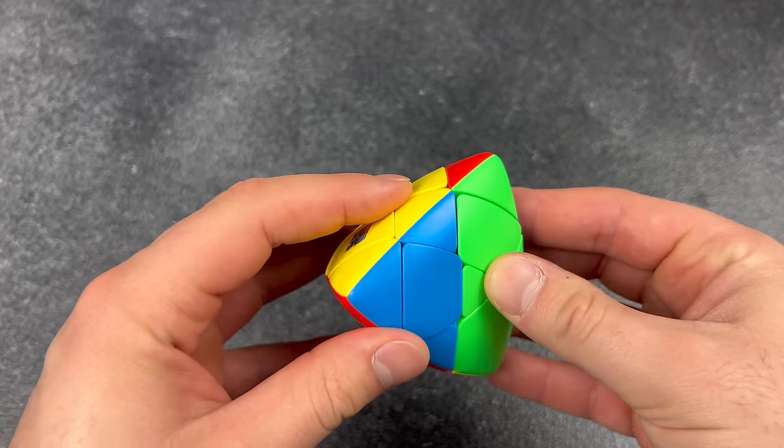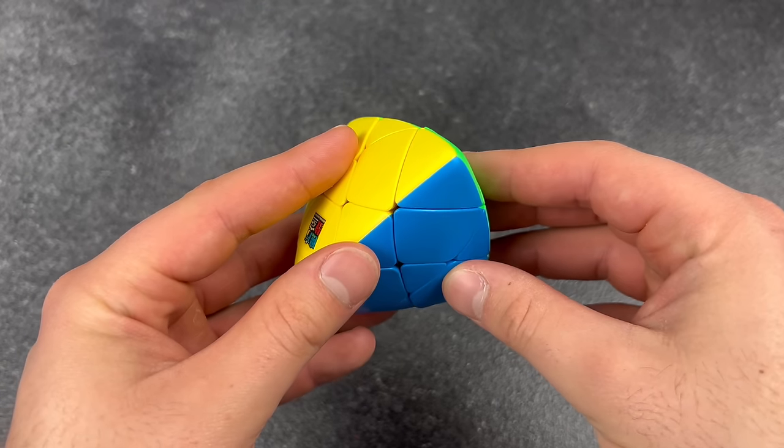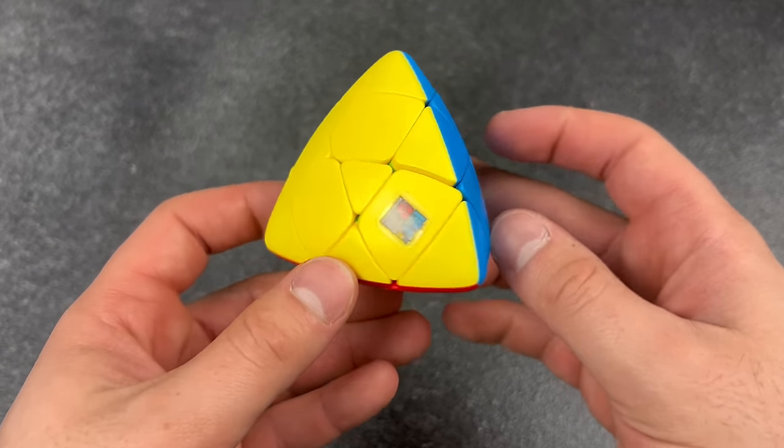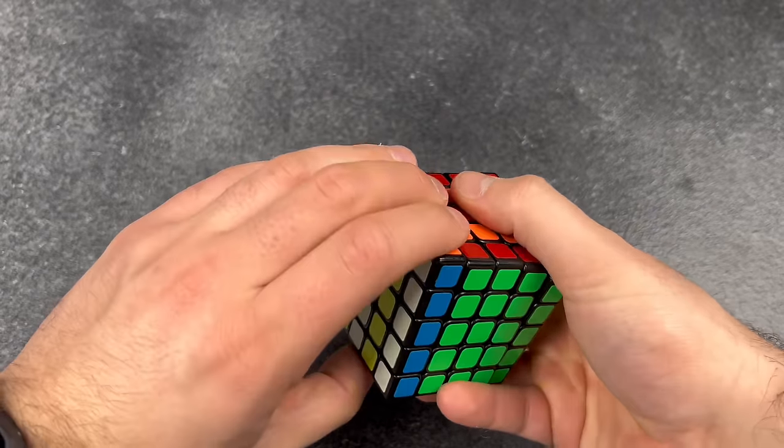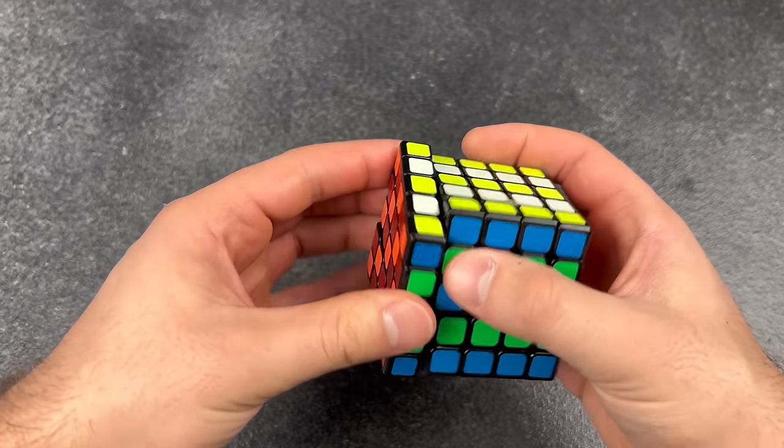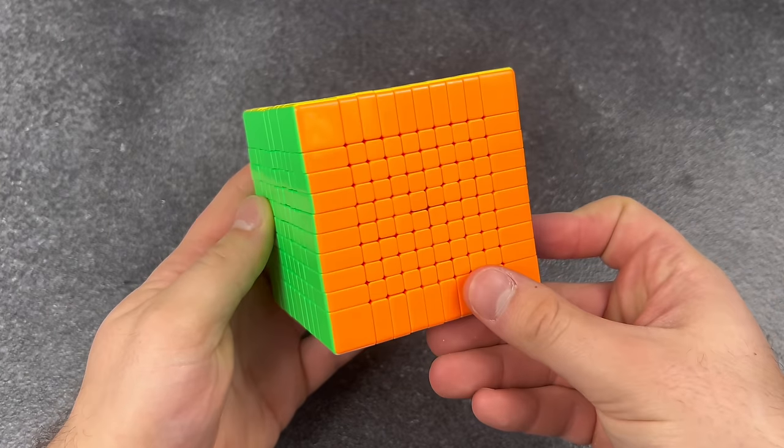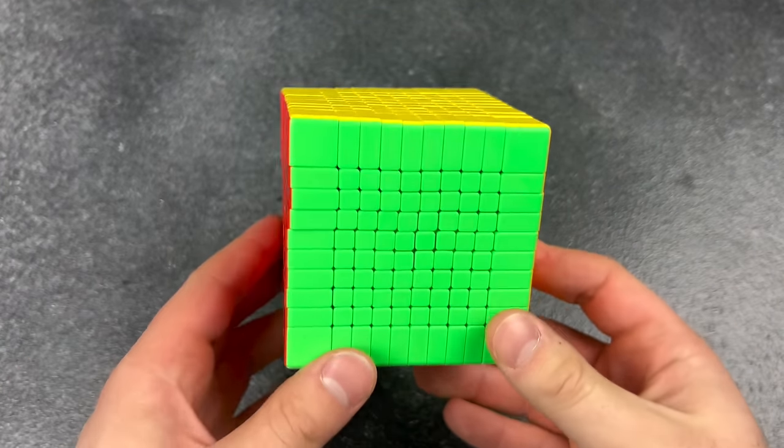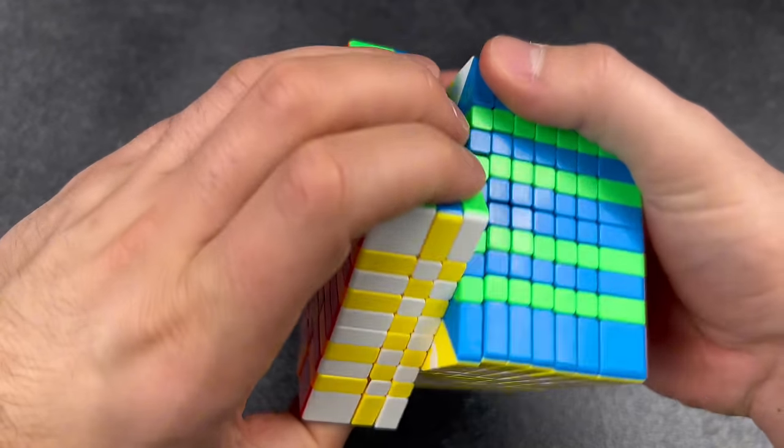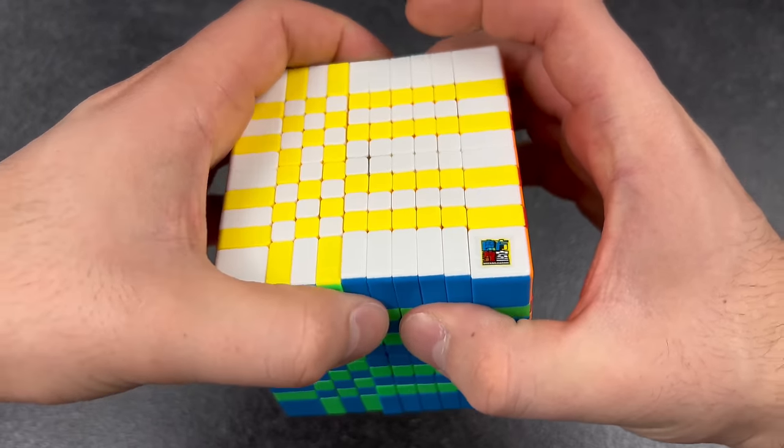The Rubik's triangle, is that a Rubik's triangle dude? No, the five cube, that's so cool bro. Is that a five cube? What are you even talking about? The 100 by 100 cube, is that a 100 by 100?